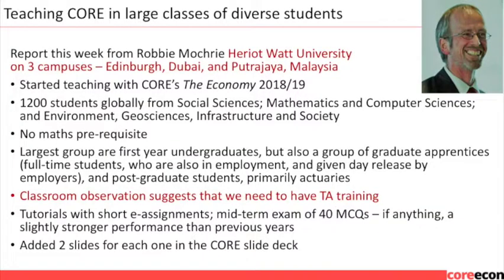This is Robby Mokri from Heriot-Watt University in Scotland. He's got a really big challenge: 1,200 students spread around the world in Edinburgh, Dubai, and Malaysia. He is responsible for delivering the 100-level principles course to all of these students simultaneously, with students operating in different time zones. He was also tasked with giving this course just a few weeks before he went on air — quite an exciting experiment.